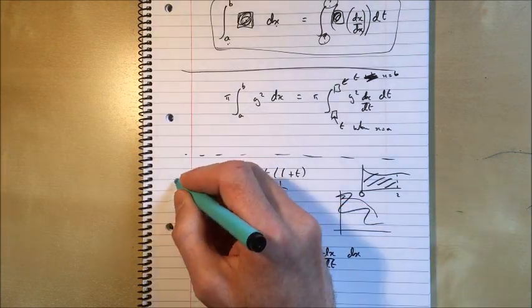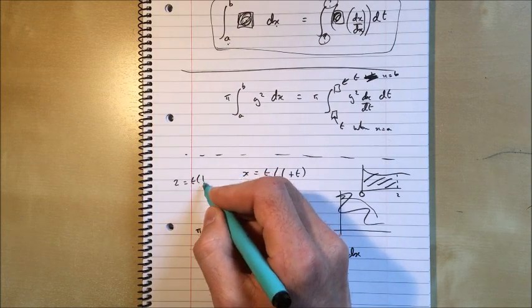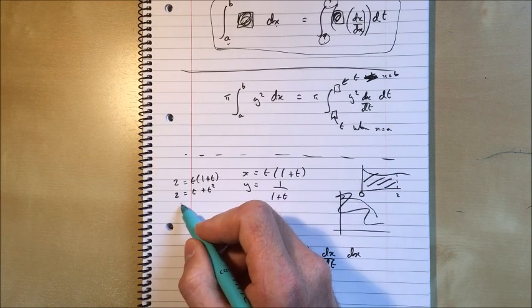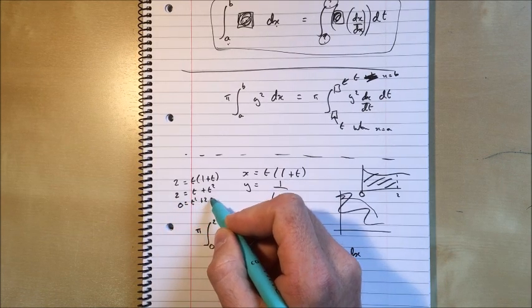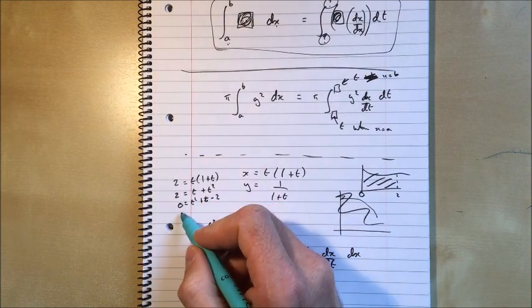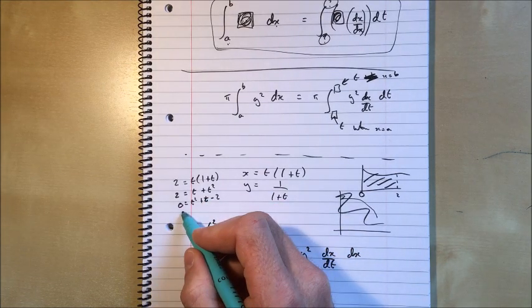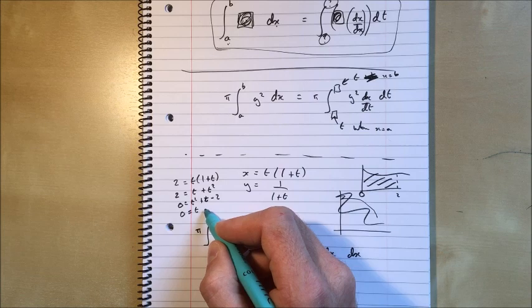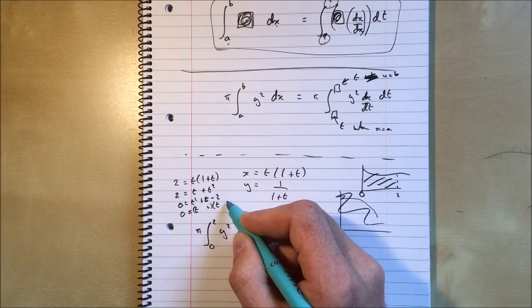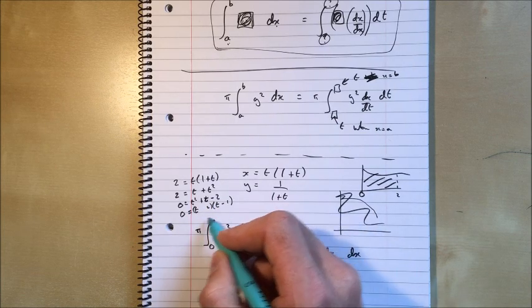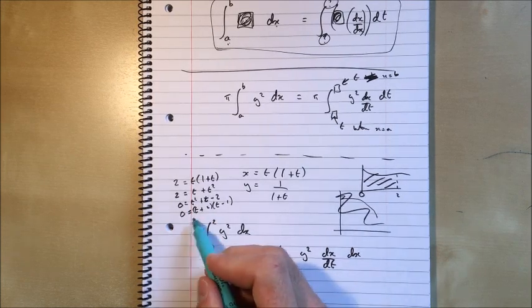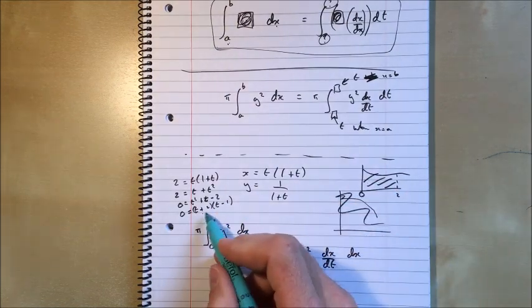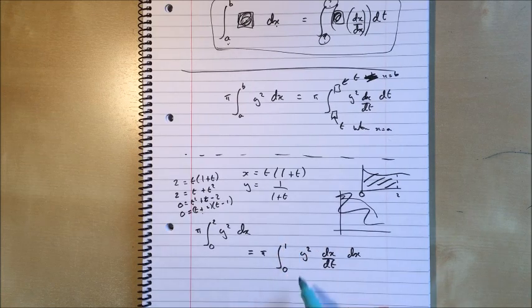When x equals 2, what's our t value? Well, that is the solution to 2 equals t brackets 1 plus t. So we've got a quadratic equation to solve there. So that is 0 equals t squared plus t minus 2. And that's going to factorize to t plus 2 times t minus 1. So when I solve this, I'm getting the value of t equals minus 2 or t equals 1. So because, again, t is not allowed to be negative, we're going to go for t equals 1.